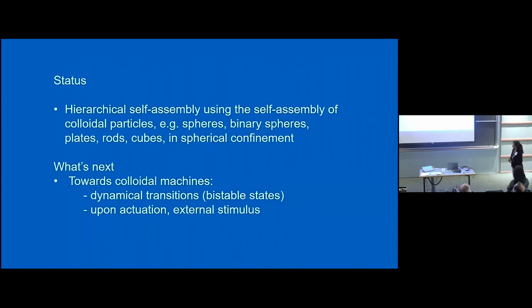So what is the status now? We can really do hierarchical self-assembly using the self-assembly of colloidal particles. We are doing it with spheres, but also binary spheres, plates, rods, and whatever you like to put in an emulsion droplet. All these structures are really passive — they are just static and rigid. We would really like to go towards colloidal machines and materials that can have dynamical transitions that we can activate with external stimuli.